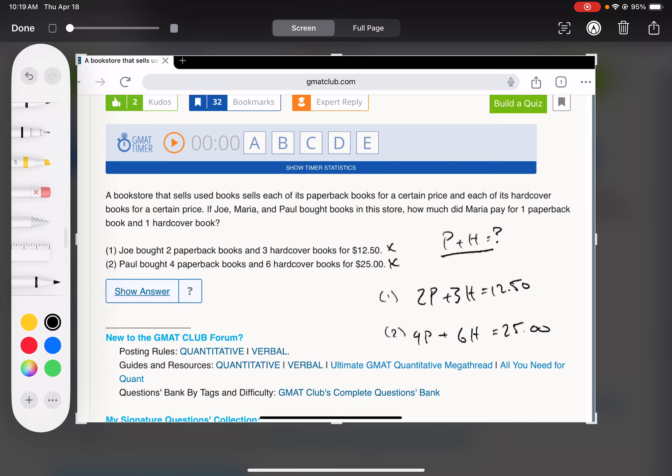Or if you don't need to know P and H individually, you just need to know what they are added together, then you could maybe get away with not having as many equations as you have variables.